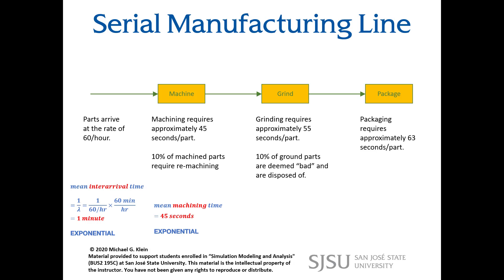For machining we've been given an average service time of 45 seconds. We will model this also with an exponential distribution. For grinding we've been given an average service time of 55 seconds — we will model this also with an exponential distribution. And for packaging, we've been given an average packaging time of 63 seconds, and also we will model this with an exponential distribution.